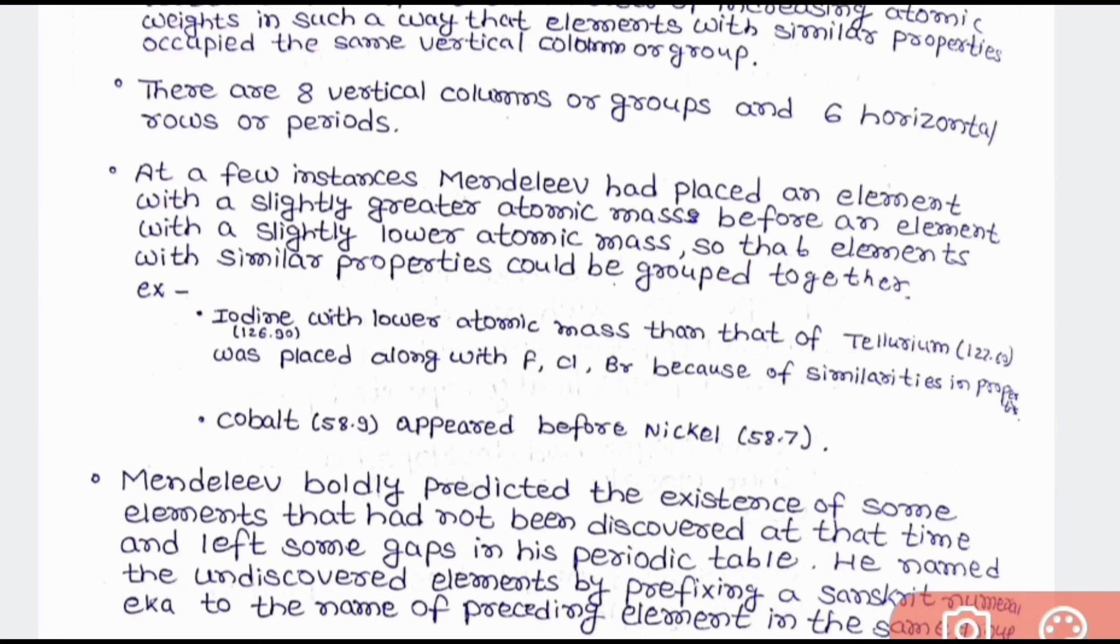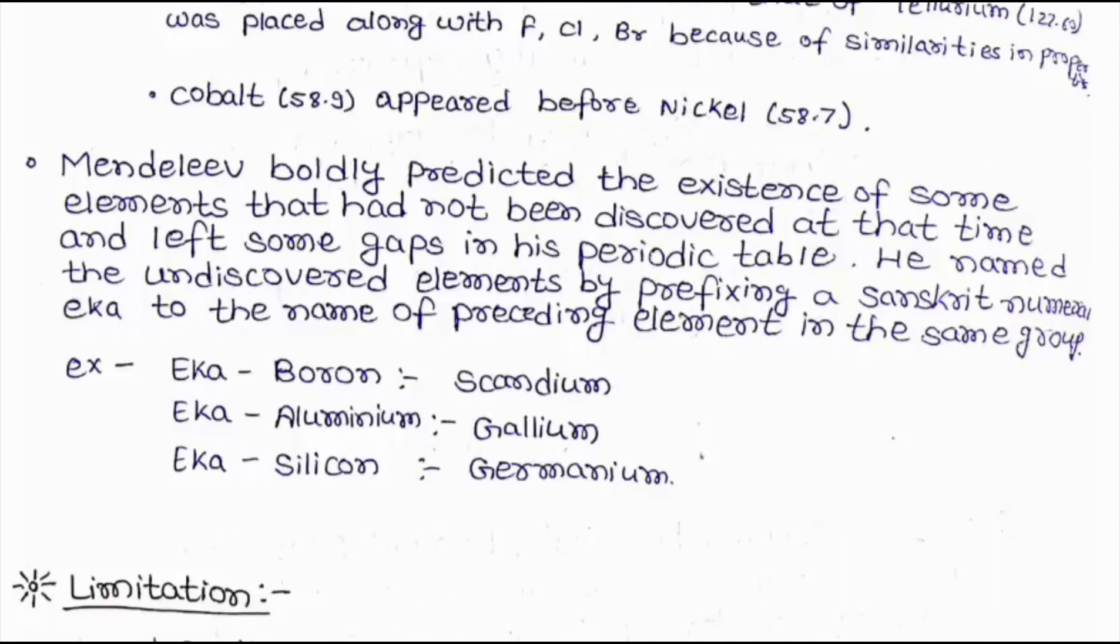And another example is that cobalt whose atomic mass is 58.9 appeared before nickel. Now the last one is Mendeleev boldly predicted the existence of some elements that had not been discovered at that time. He left some gaps in the periodic table and he named the left undiscovered elements by prefixing a Sanskrit numeral Ekka to the name preceding the element in the same group. Some of the examples are Ekka Boron which was named for Scandium and Ekka Aluminium was named for Gallium and Ekka Silicon was named for Germanium.